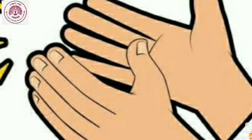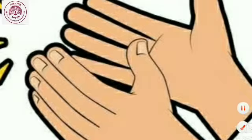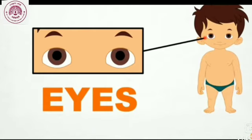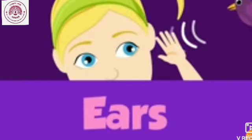Children, what can you see in this picture? Yes, hands. Now, what am I doing with my hands? Yes, clapping. Now, can you tell me what this picture shows you? Yes, we all know that we can see with our eyes. We have two eyes. Now, which picture is this? Yes, this is ears. We have two ears.